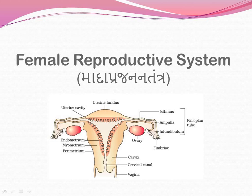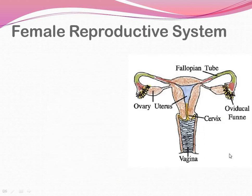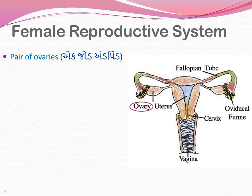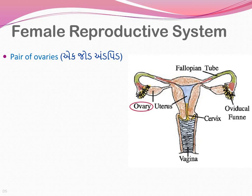Starting with the first one - it is ovaries. There is a pair of ovaries, highlighted here. The ovary is on either side and they are located in the lower abdominal cavity, or you can call it the pelvic region. Ovaries are primarily for gametogenesis, specifically oogenesis.